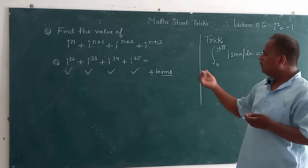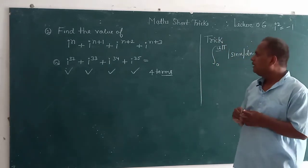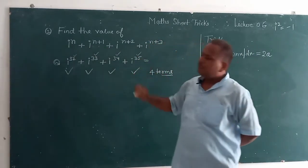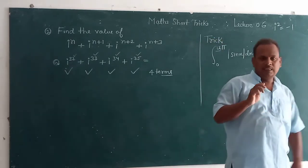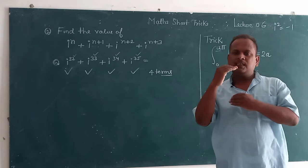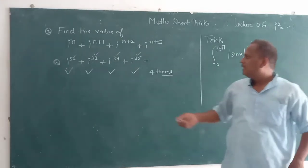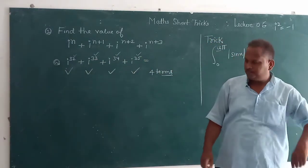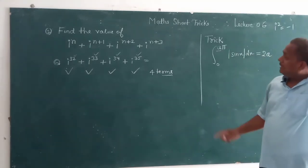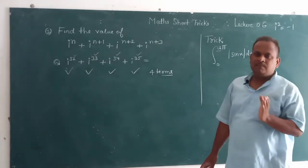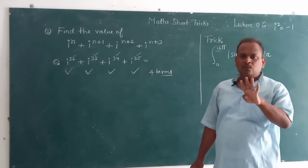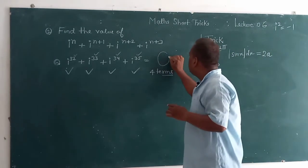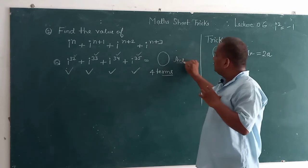And four terms solution not trick. And two things: this power is consecutive - one, two, three, four. So this is the question in which i is related to four terms and the power is consecutive. The answer is zero. This is the answer.